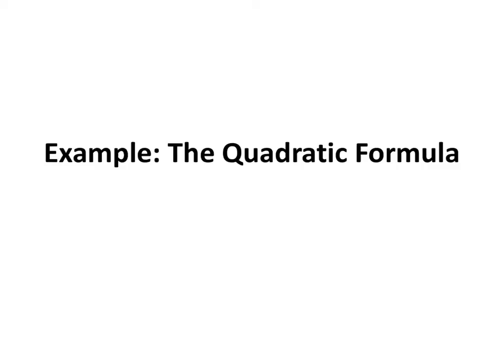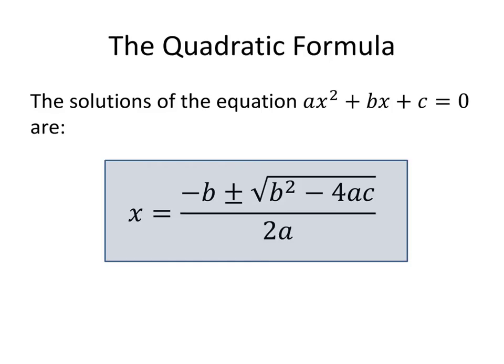In this video, we'll review the quadratic formula and use it to solve a couple example equations. So as you might recall, the quadratic formula looks a little something like this. The solutions of the equation ax squared plus bx plus c equals 0 are x equals negative b plus or minus the square root of the quantity b squared minus 4ac, and that's all divided by 2a.